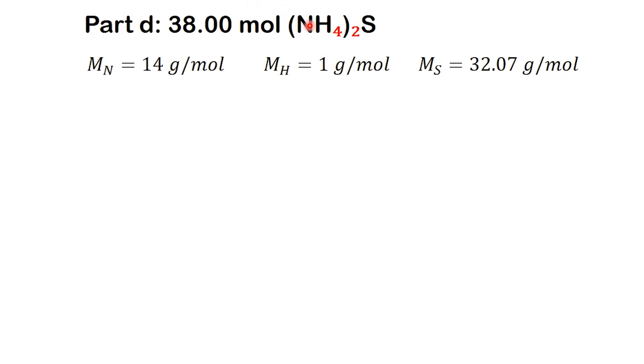To calculate it, we need to look at the elements in the formula: molar mass of nitrogen, molar mass of hydrogen, and molar mass of sulfur. Now, let's break down the compound. The formula (NH4)2S contains two nitrogen atoms, eight hydrogen atoms, since each ammonium ion has four hydrogens and there are two of them, and one sulfur atom.